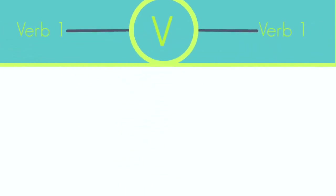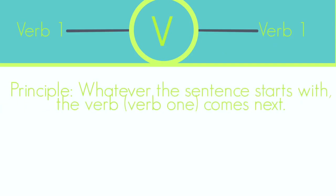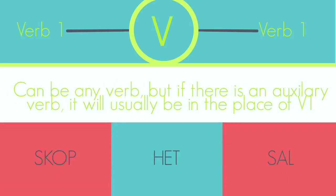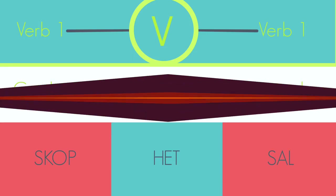The next letter is the silent V, and this stands for Verb 1. There is a simple principle in Afrikaans: whatever the sentence starts with, the verb comes next. The first verb in Afrikaans sentences can be any verb, but if there is an auxiliary verb, such as 'het' or 'sal' in the sentence, they will usually be in the position of Verb 1.